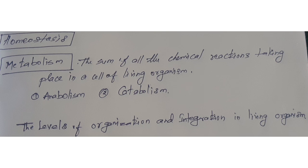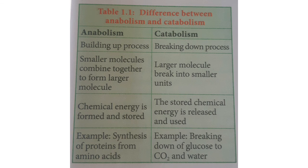Metabolism means the sum of all the chemical reactions taking place in a cell of a living organism. All total chemical reactions in the cell are metabolism. There are two different types of metabolism: anabolism and catabolism. What is anabolism? It is a building up process — smaller molecules combine together to form larger molecules. That is called anabolism. Larger molecules break down into smaller units — that is called catabolism.